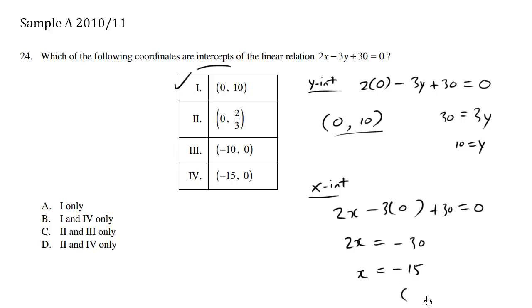So we have the point xy, which is negative 15 comma 0, which happens to be over here.